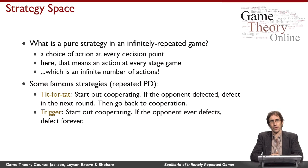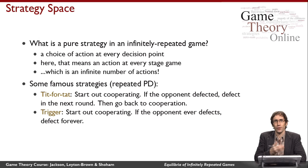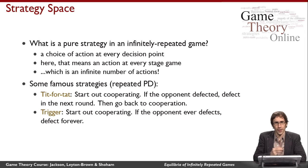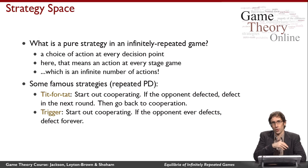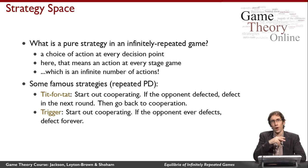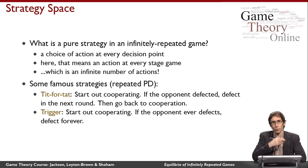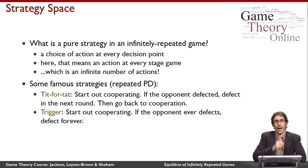In an infinitely repeated game, your strategy is going to be a choice of action at every decision point, which means an action that you would take at every stage game. Bear in mind that when you take those actions, you get to reason about everything you've seen before in the game — you can remember all of your own previous actions and all of the actions in previous stage games by the other players. So really your pure strategy space is a mapping from every history to an action choice that you would make.